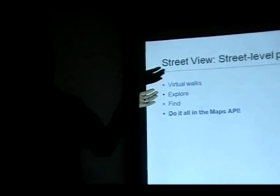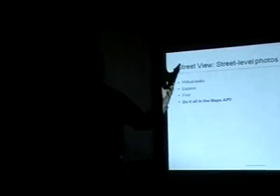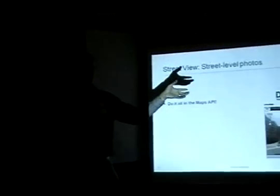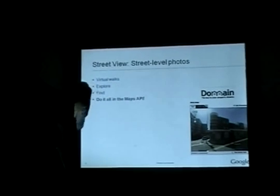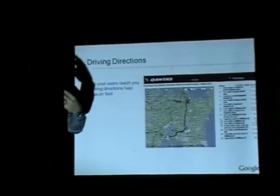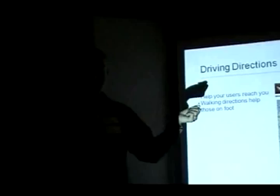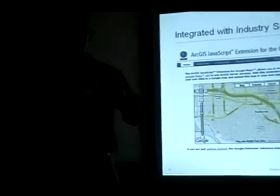Some of you may have seen the Street View launch we had a couple of months ago — it got a lot of press and a lot of publicity. Domain, for example, is using this in the API to show housing information, and pretty much all that imagery is available to you for free on your website. Driving directions are another common functionality — Qantas is using it, and tens of thousands of sites use this so users won't have to leave to find directions to whatever business you may be advertising.